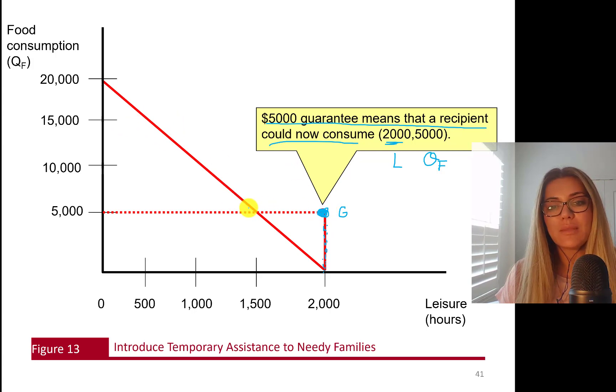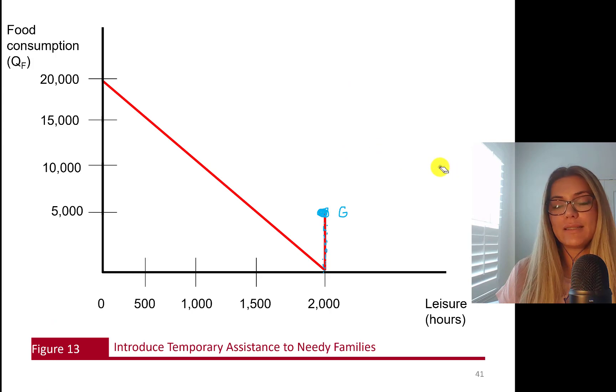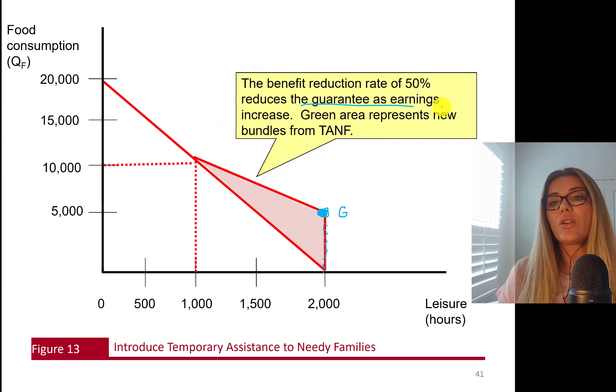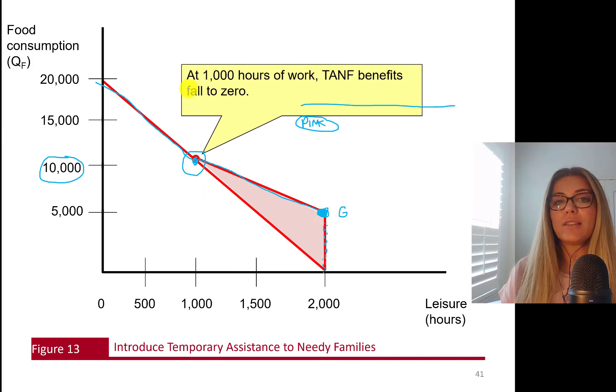This is a benefit guarantee, $5,000. I'm going to put G here, $5,000. $5,000 guarantee means that a recipient could now consume 2,000 hours of leisure and $5,000 worth of food. So her budget line jumps here. So it starts from G, and this budget line, how am I going to connect this to this budget line? So at 1,000 hours of work, temporary assistance to needy families' benefits fall to zero.